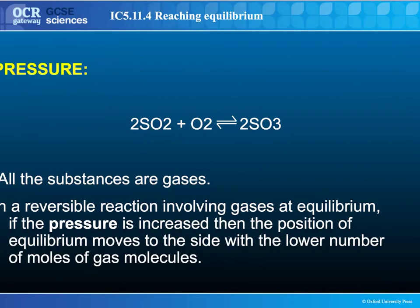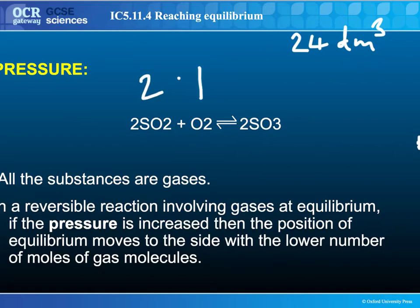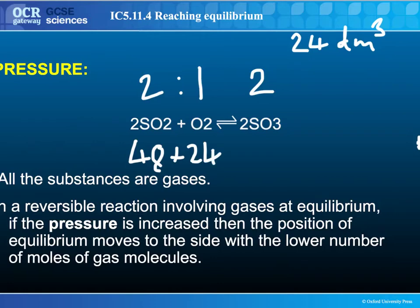Now pressure — the first situation we need to look at. The thing to recall is molar volume: one mole of a gas has a volume of 24 litres, or 24 DM³. In this stage of the contact process, you've got two moles of sulfur dioxide and one mole of oxygen reacting to form two moles of sulfur trioxide. On the left-hand side you have 48 plus 24 litres — 72 litres total. The same amount of sulfur trioxide only takes up 48 litres. So if you increase the pressure, you favour the reaction with the lowest volume, which is the formation of sulfur trioxide — the lower number of moles of gas.